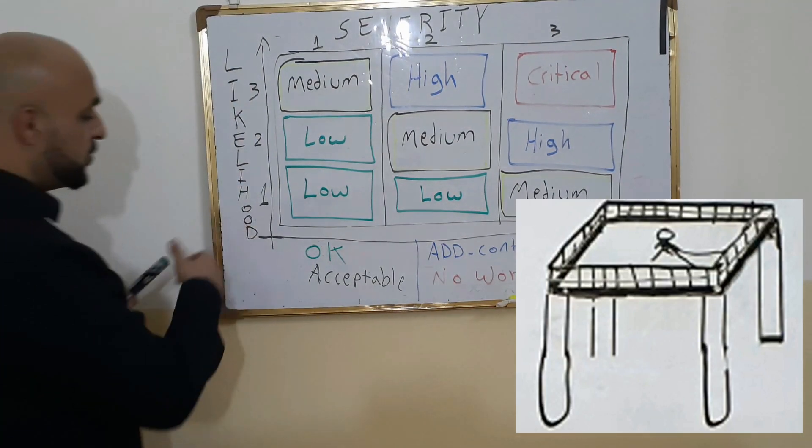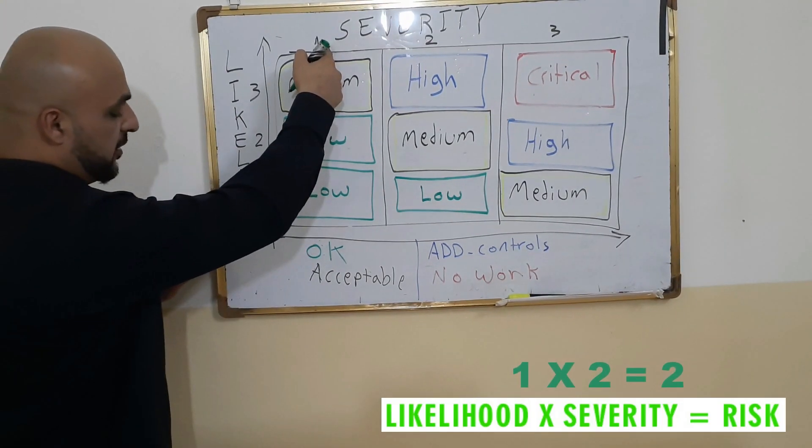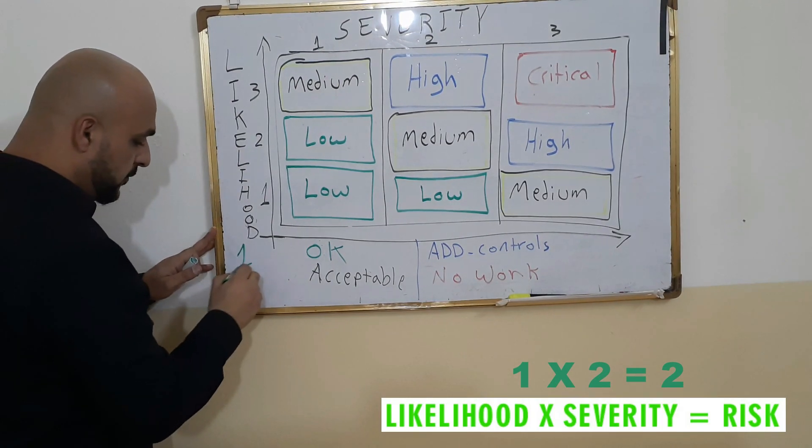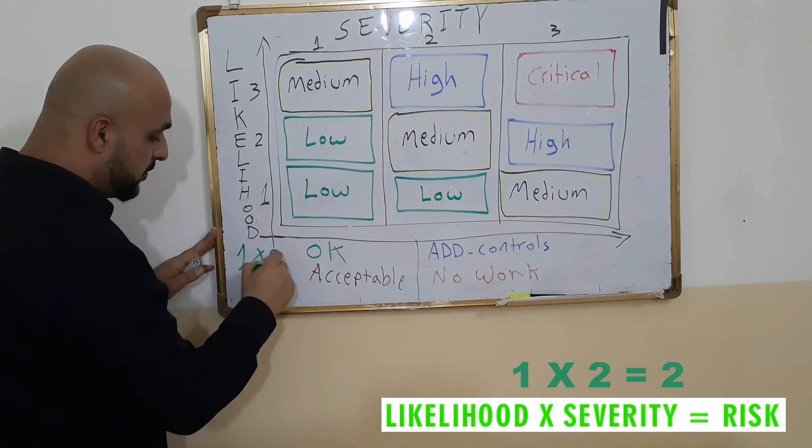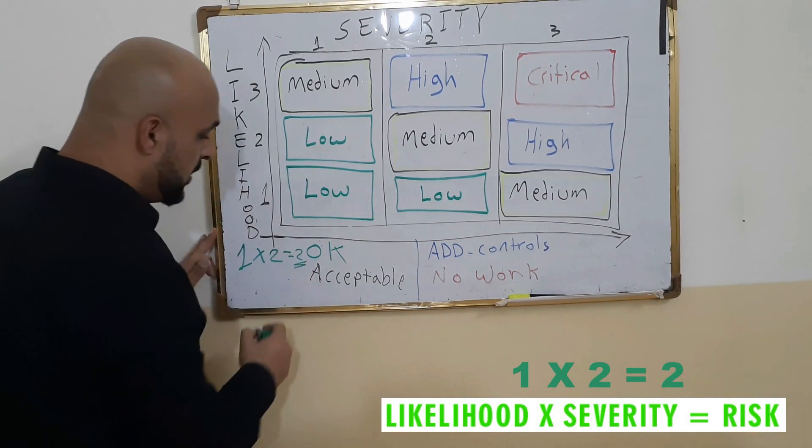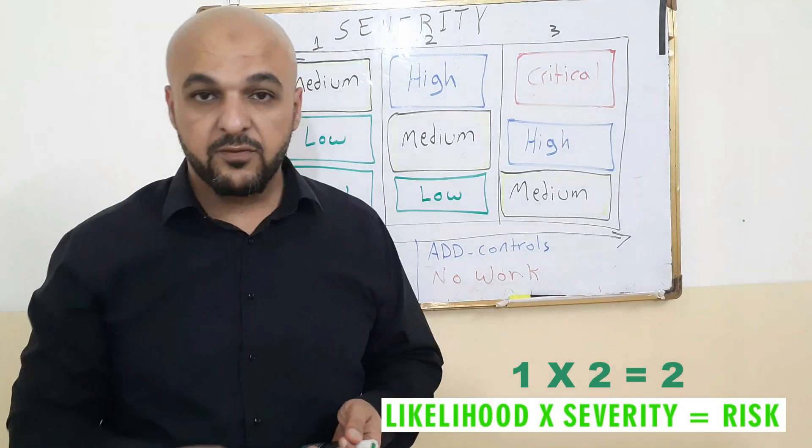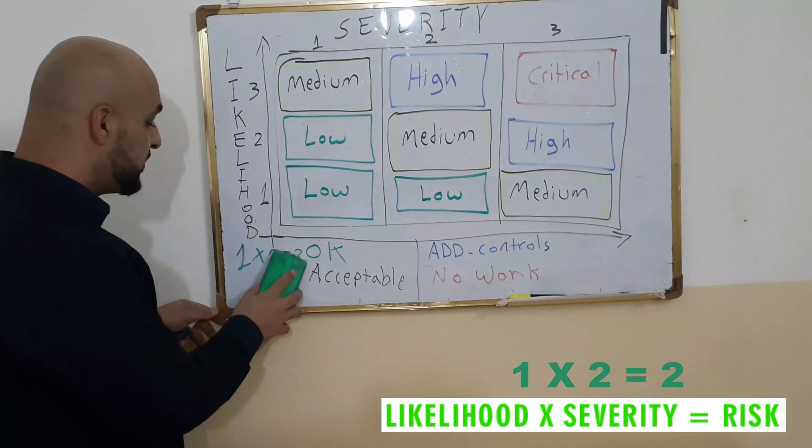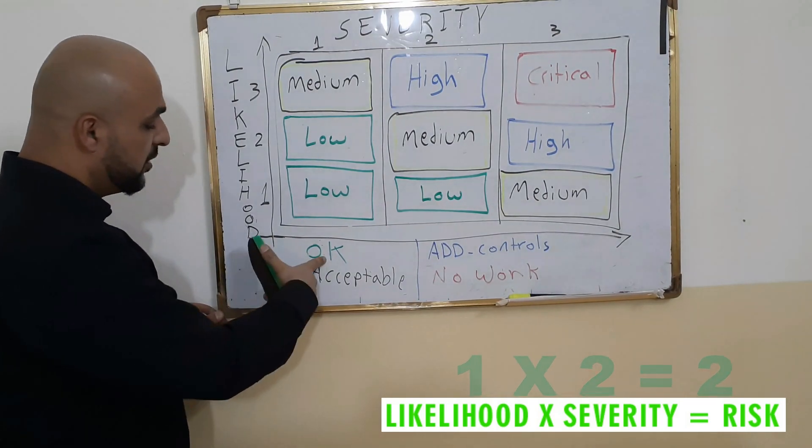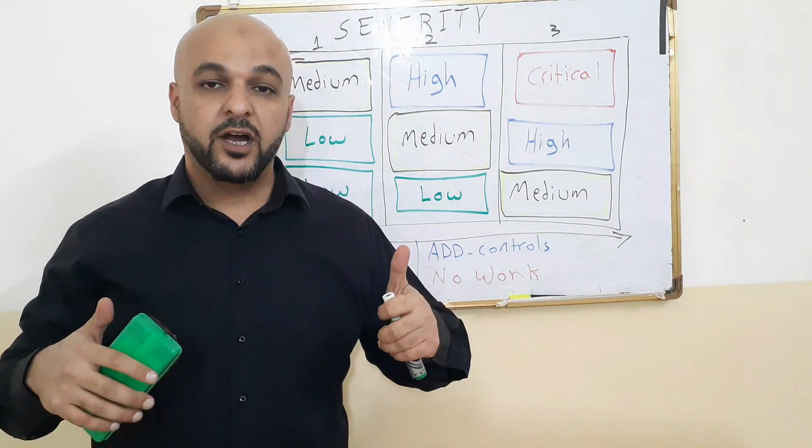So now what we do is we take one and multiply it by two. So one multiplied by two equals what? Two. So here the risk level is low. The risk level is low. So that tells us this person can work and it is okay. He's in the green. All right. Great.